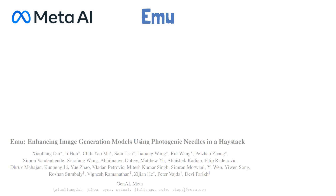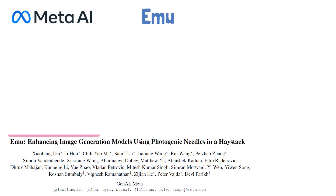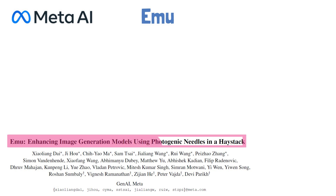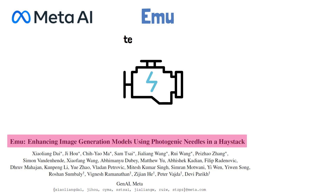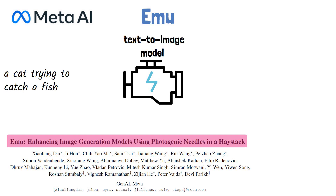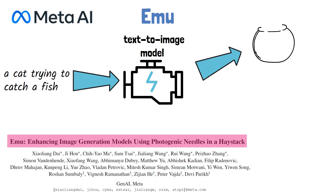Thank you for joining this video about EMU, a new text-to-image generation model by MetaAI, which was presented in a research paper titled 'EMU: Enhancing Image Generation Models Using Photogenic Needles in a Haystack.' Text-to-image models are able to take a prompt as input, such as 'a cat trying to catch a fish,' and yield a high quality image in response that matches the input prompt properly.